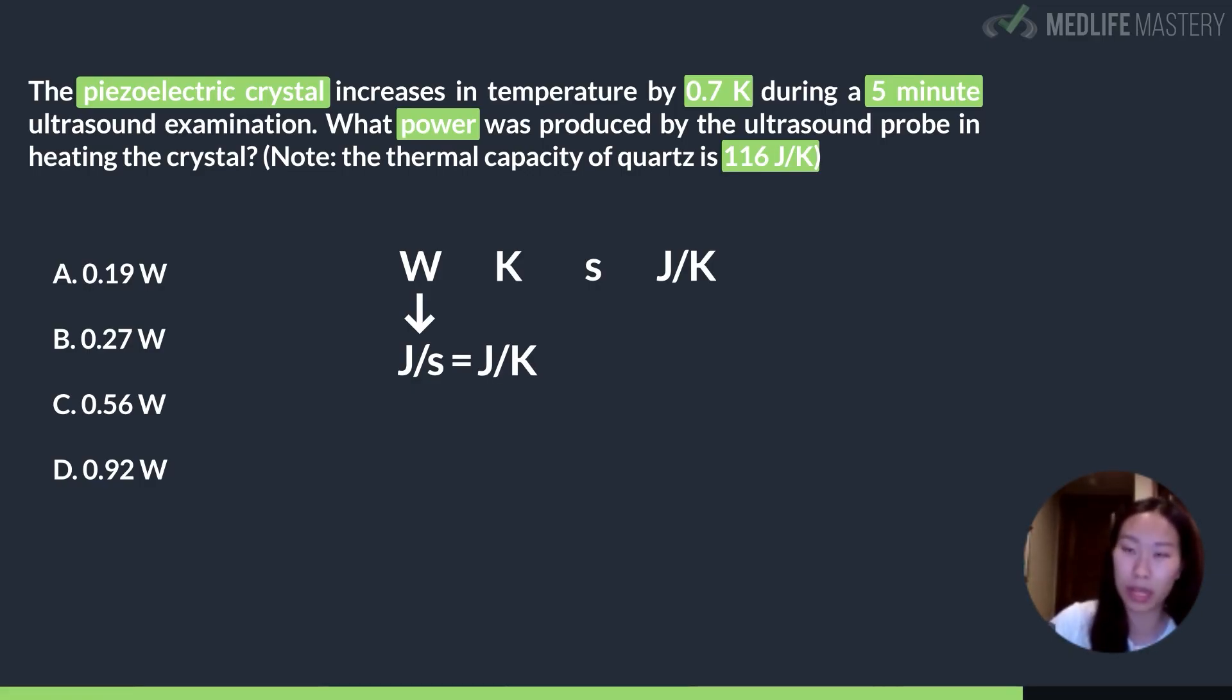In this case, we have kelvin here, so we probably just will multiply by that value. Then last but not least, we have seconds in the denominator of the answer choice, and we have seconds as one of our possible values. So we know that we're probably going to need to divide by that to get that into the denominator. So it's going to be divide by seconds.